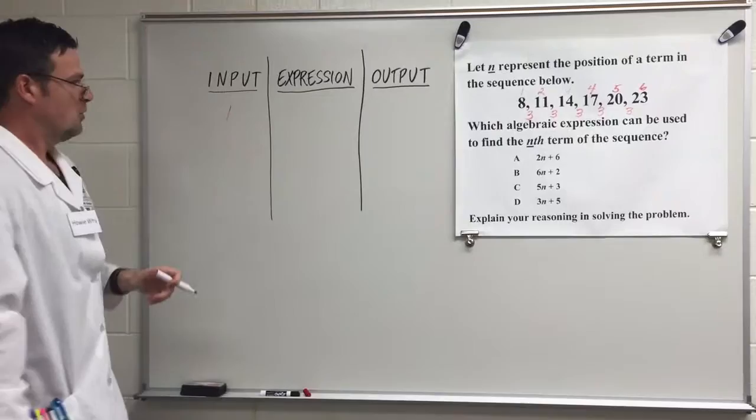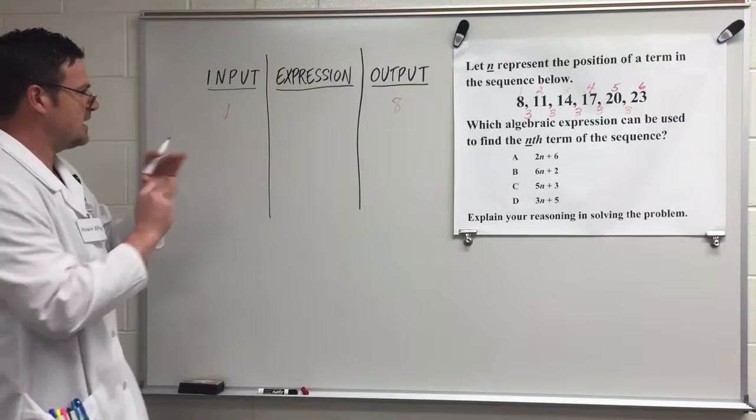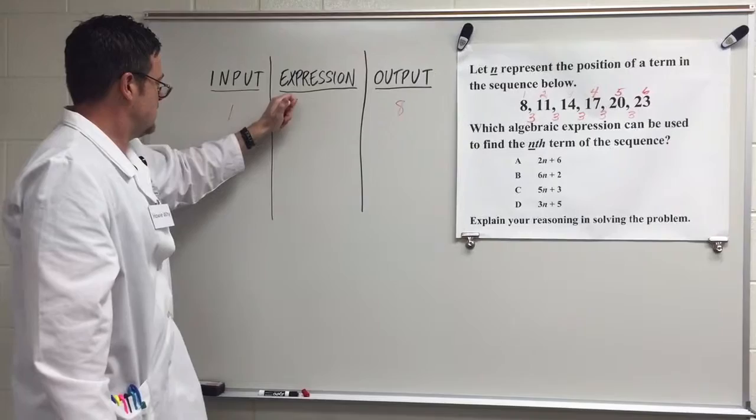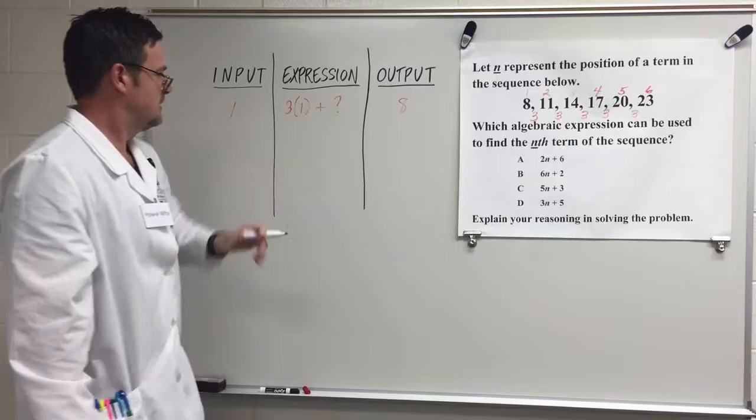Our input was 1. I know my first term was 1, and my output was 8. But how did I get there? I do know my first term and each term is growing by 3, so 3 times 1 plus what is going to give me 8?